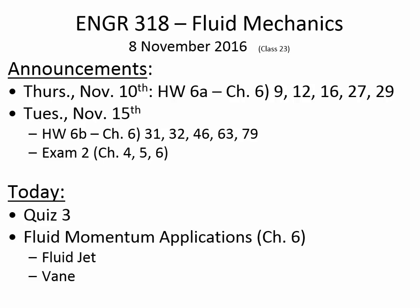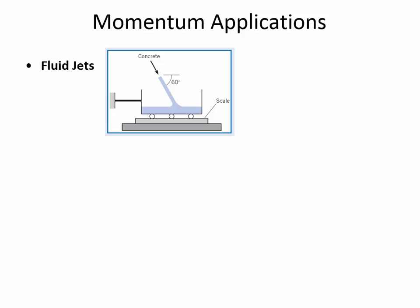Any questions before we start talking about fluid momentum applications? So there are three main types of problems in Chapter 6. The first type is where we've got a fluid jet coming in and either striking an object or causing some sort of a force as it is intercepted. Here's an illustration of a fluid jet. The jet moving through the air doesn't have any pressure, but it does have a mass flow rate and a velocity. What would happen to this system — it looks like a tank on rollers — if we cut this tether?